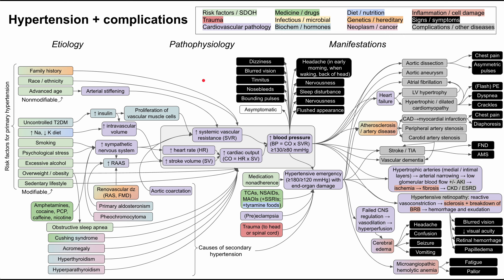This is a mechanism of disease map on hypertension and the complications of hypertension. I'll be talking about the etiologies of hypertension, as well as the pathophysiology and the many manifestations — both direct symptoms of hypertension, the chronic long-term sequelae, as well as the acute symptoms of hypertensive emergency and how that might present as end-organ failure. As in all of these flowcharts, the boxes are color-coded, and I'll be clearing all of these bubbles and talking through them one by one.